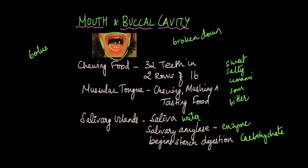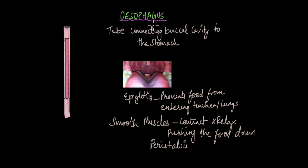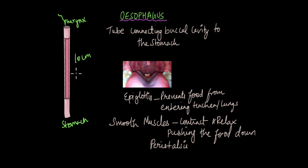So, next we'll take a look at the esophagus. The esophagus is the tube that basically connects the buccal cavity — the back of your mouth — to the stomach. Here is the back of your mouth and the pharynx, and here is the stomach. The esophagus is around 10 cm long and around 3 cm wide, and it is layered with several layers of smooth muscles. There is a structure known as the epiglottis at the base of the pharynx.